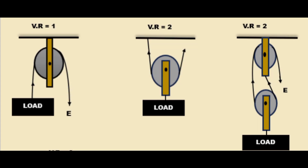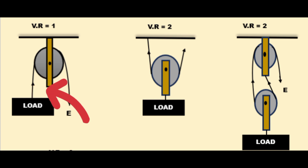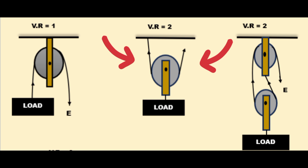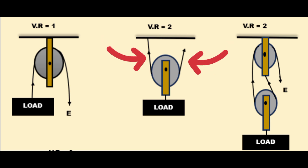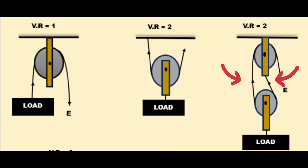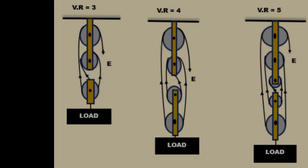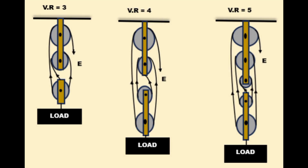For the diagrams, we have a pulley with a velocity ratio of one, which has one string directly carrying the load. Then we have two strings carrying the load — velocity ratio two. Then three strings — velocity ratio three. Then four strings — velocity ratio four. And then velocity ratio five — that is a block and tackle.